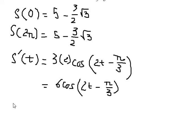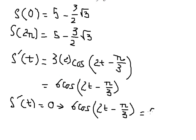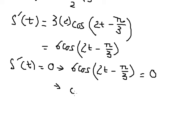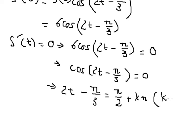Next, we set the first derivative equal to zero, so s'(t) = 0. That means the expression equals zero, and we are left with just cosine of (2t − π/3) equals zero. So we have 2t minus π/3 equals zero.